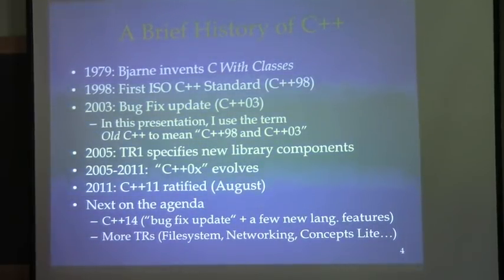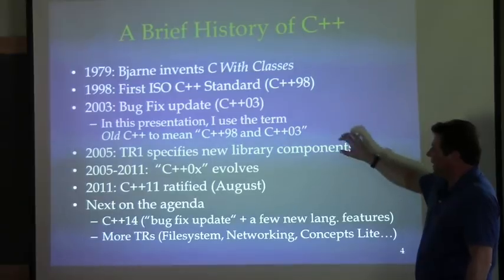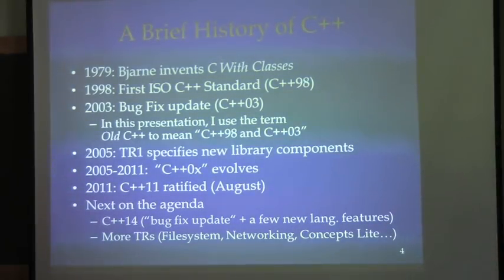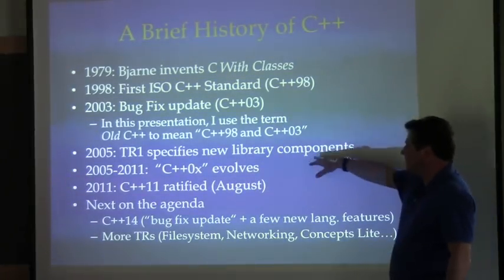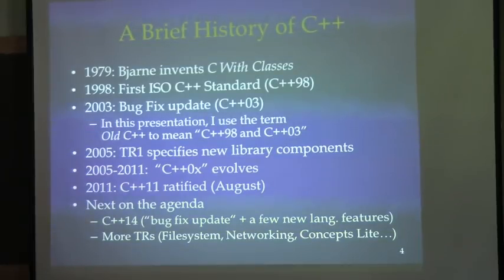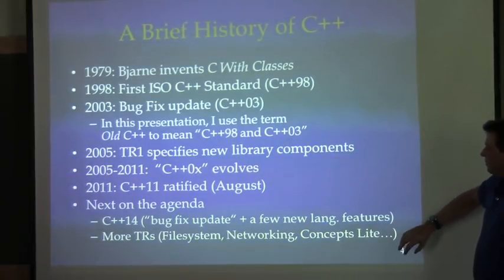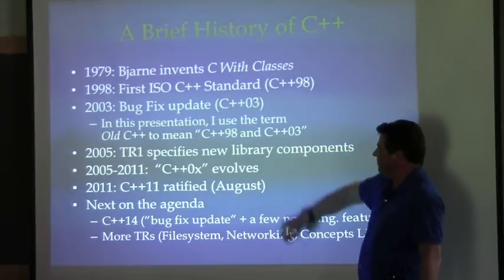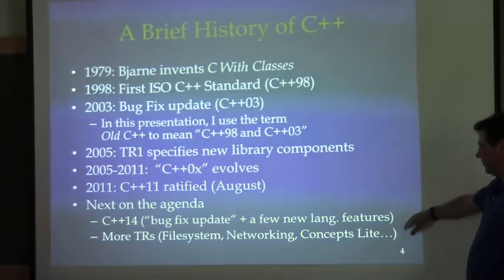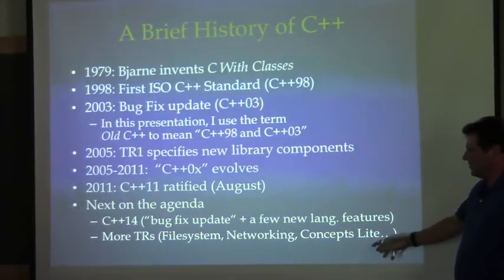A lot of those library components could be implemented in terms of the existing old C++ language, and vendors supplied them as a sub-namespace of standard called TR1, giving the whole community many years to become acclimated — things like shared_ptr, hash-based containers, etc. The language continued to evolve towards standardization, finally ratified in August of 2011. The next steps will be C++14, kind of a bug-fix update plus — it's actually going to introduce a few new language features as well. The library will continue to evolve through TRs or TSs for things like the file system library and perhaps networking concepts lite.